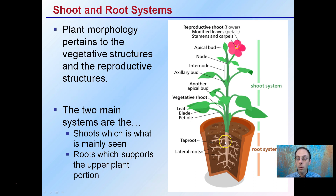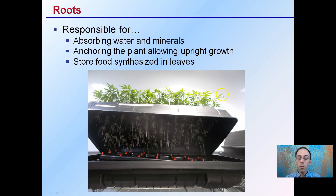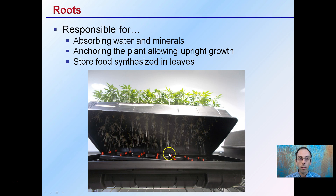There are a lot of roots — there are tap roots and also very important root hairs. Starting with the roots, they're responsible for absorbing water and minerals. You can see a bunch of roots here in a propagator. They're also important for anchoring the plant to allow for upright growth, and they store food that is synthesized in the leaves. Roots have a very important function despite mostly being below ground and oftentimes not seen by growers.